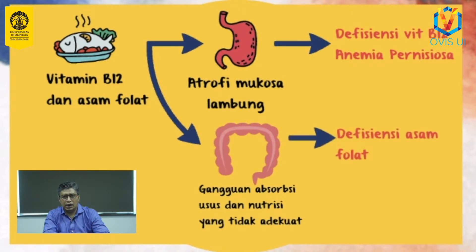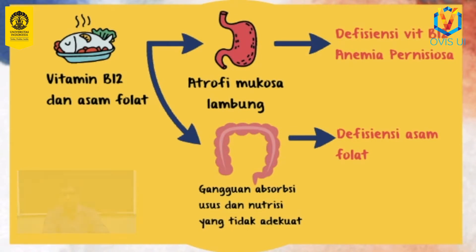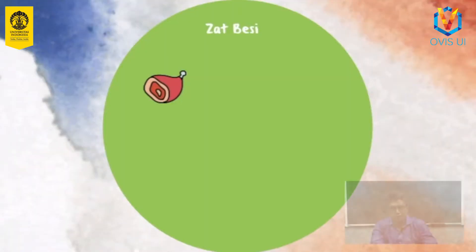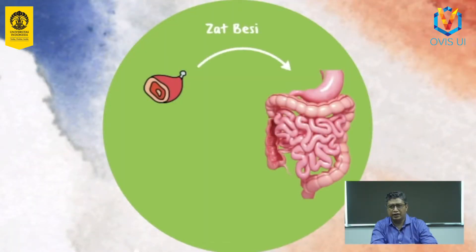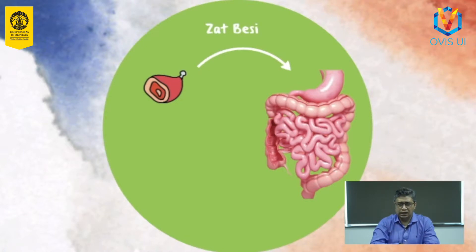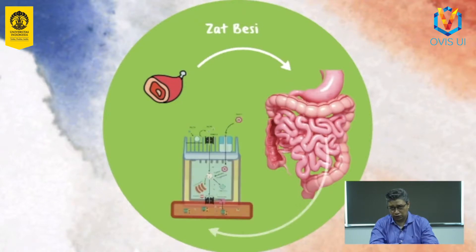Selain gangguan absorpsi, defisiensi asam folat mungkin juga terjadi akibat nutrisi yang tidak cukup. Dalam eritropoiesis, zat besi dibutuhkan terutama untuk mensintesis hemoglobin. Zat besi diperoleh dari sumber makanan, terutama makanan hewani seperti daging dan liver. Besi dalam makanan tersedia dalam bentuk feripidoksida, feriprotein, dan besi hem. Namun besi hanya dapat diabsorpsi dalam bentuk ferro atau Fe2+ ataupun hem.